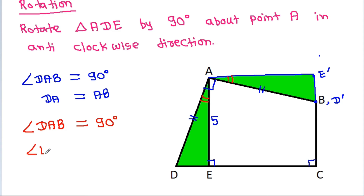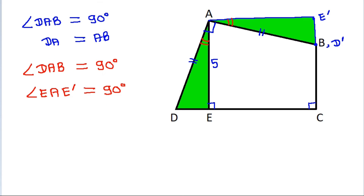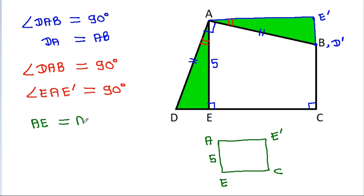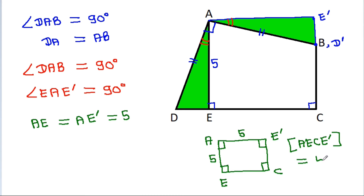So, angle E, A, E prime will be equal to 90 degrees. And in A E prime C E, AE is 5, and AE will be equal to AE prime, that will be 5. This angle is 90 degrees, this angle is 90 degrees, this angle is 90 degrees, so this angle will also be 90 degrees. So, area of A, E, C, E prime will be equal to 5 squared.